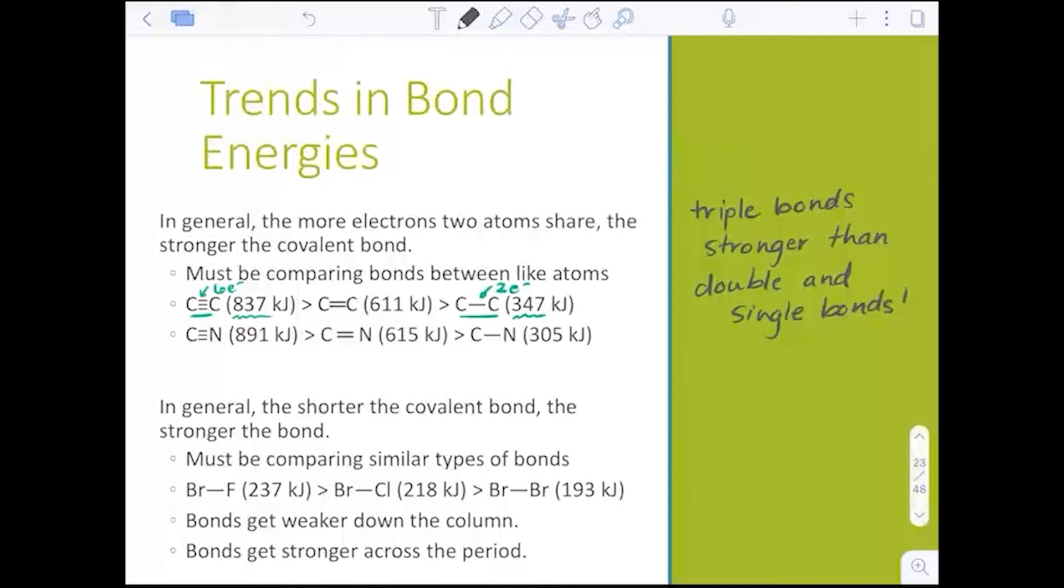Why? Because there's more electrons in those bonds. And again, when we look at that idea, we can start to think about triple bonds are holding those two atoms closer together. Their attractions are tighter. And so triple bonds are actually shorter bonds than double, shorter than double and single bonds.